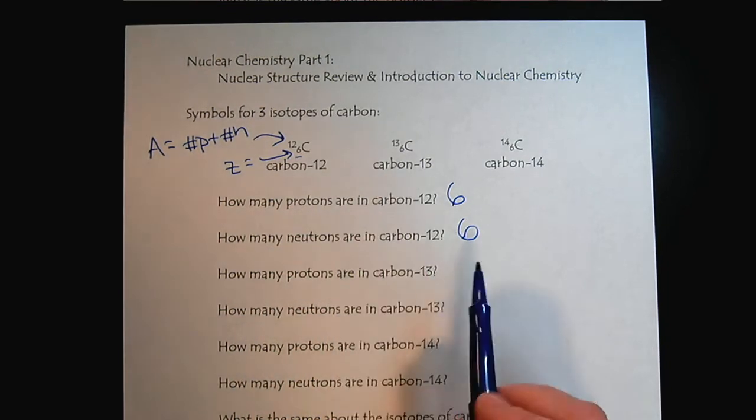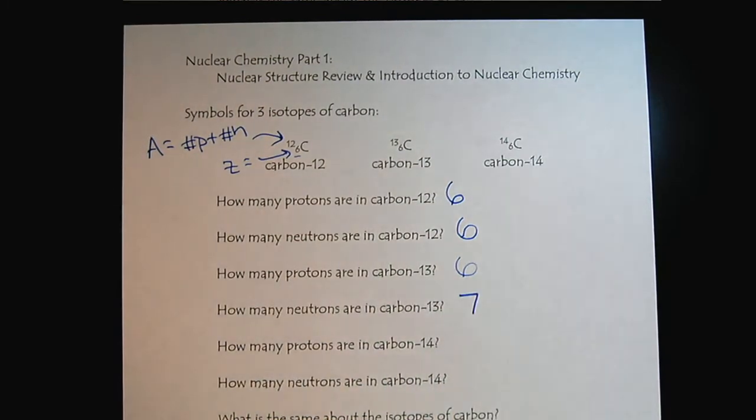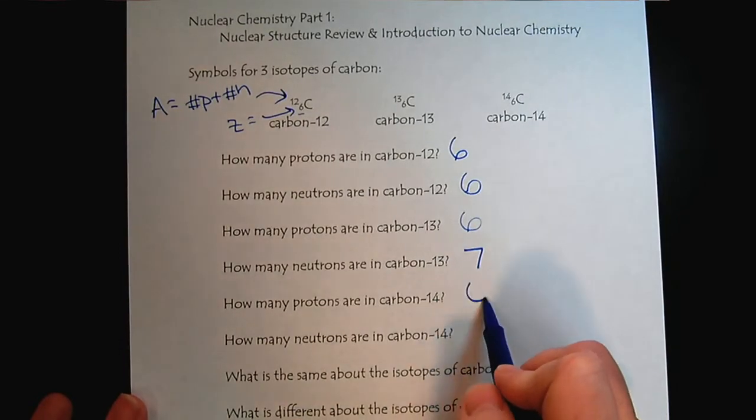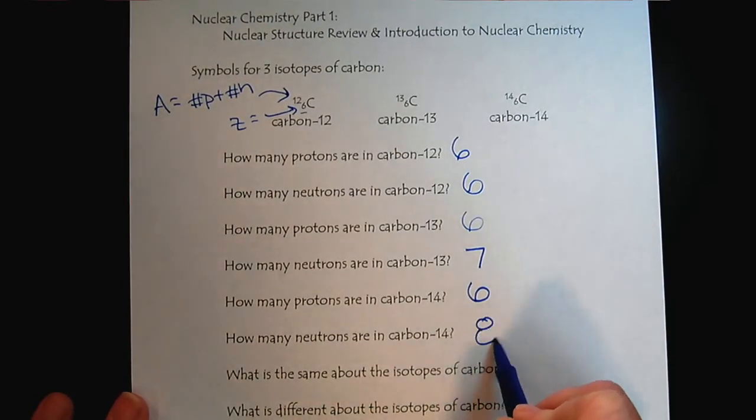So carbon-13, of course, has six protons as well, but has seven neutrons. And then, of course, carbon-14 also has six protons, but now it has eight neutrons.